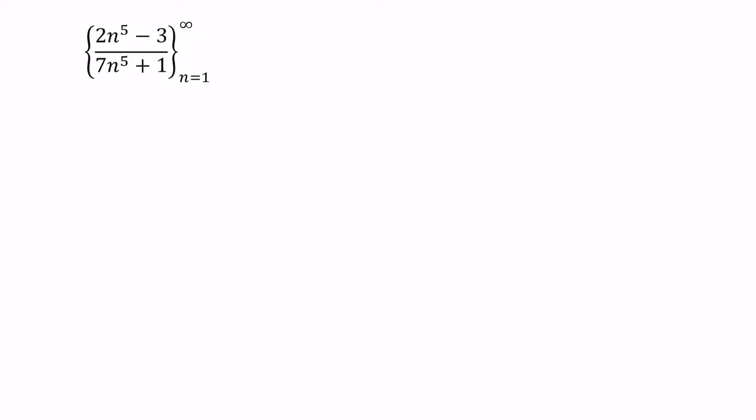So our sequence in this case, a sub n, what we're going to look at is 2n to the fifth minus 3 over 7n to the fifth plus 1. The limit as n grows large, that is as n approaches infinity, of 2n to the fifth minus 3 divided by 7n to the fifth plus 1.